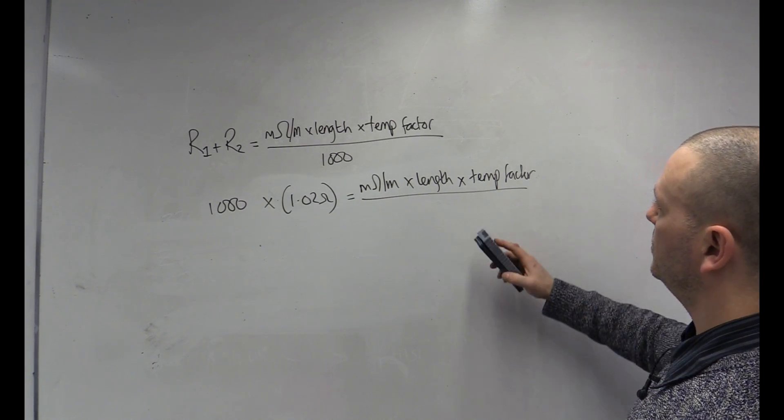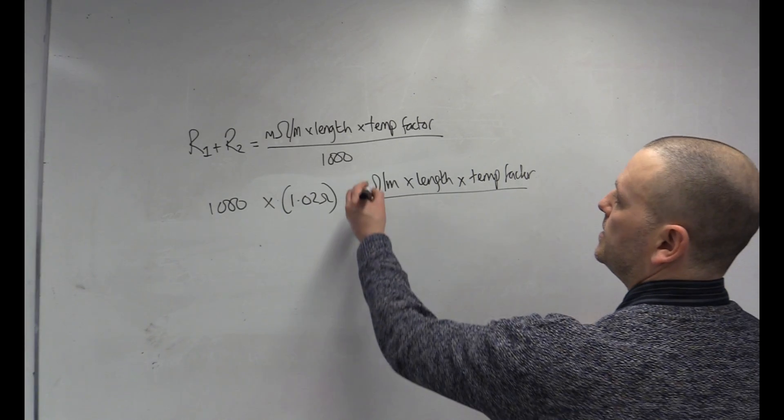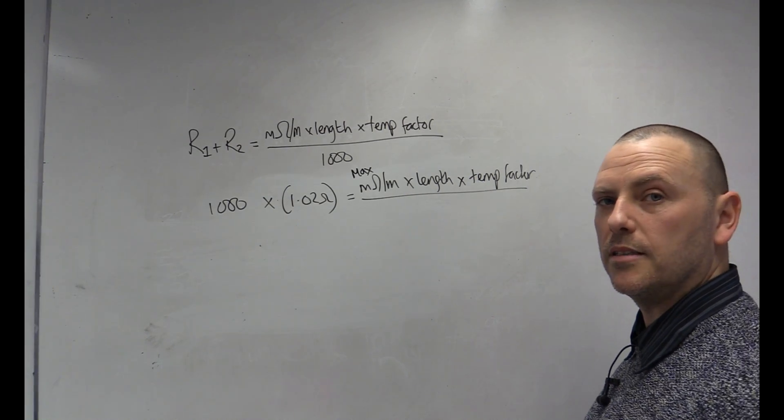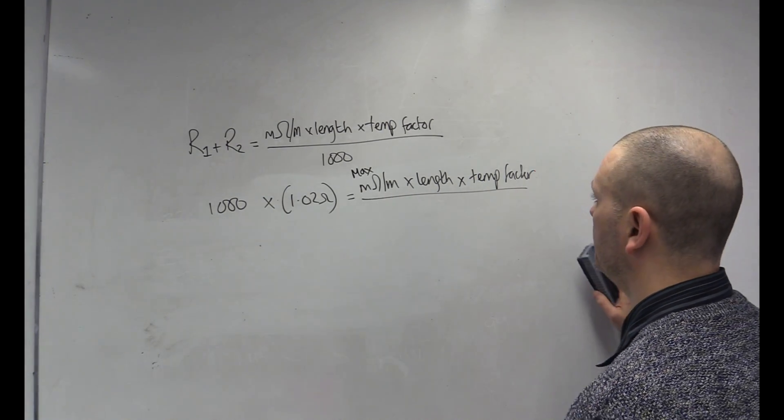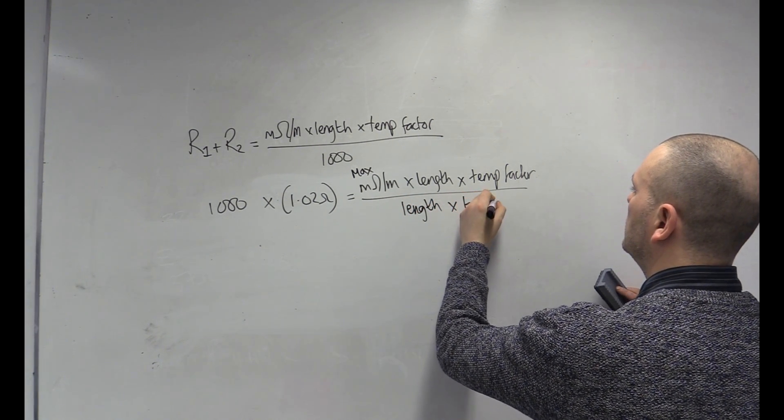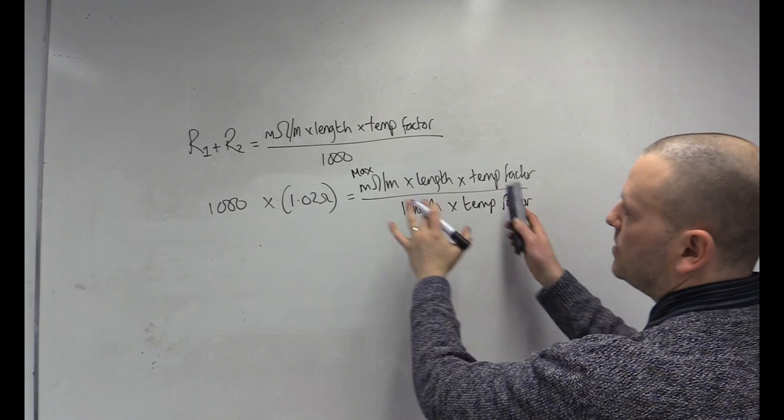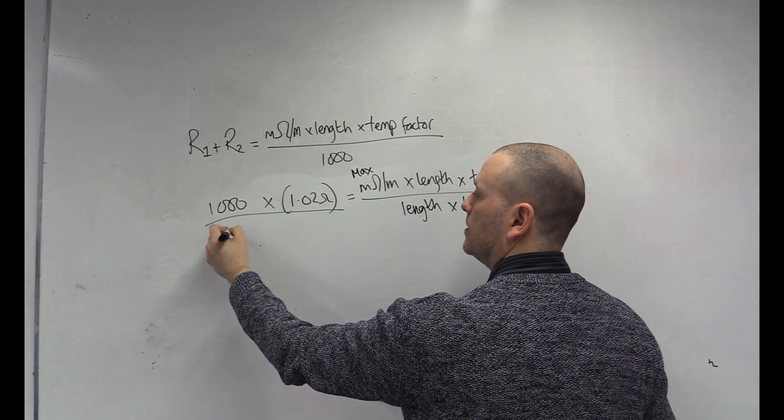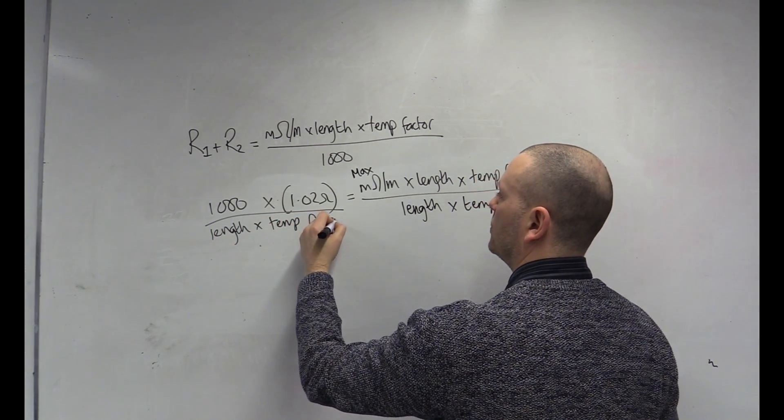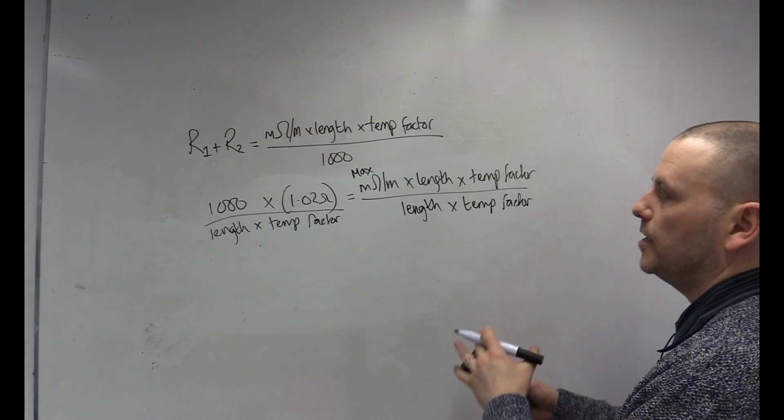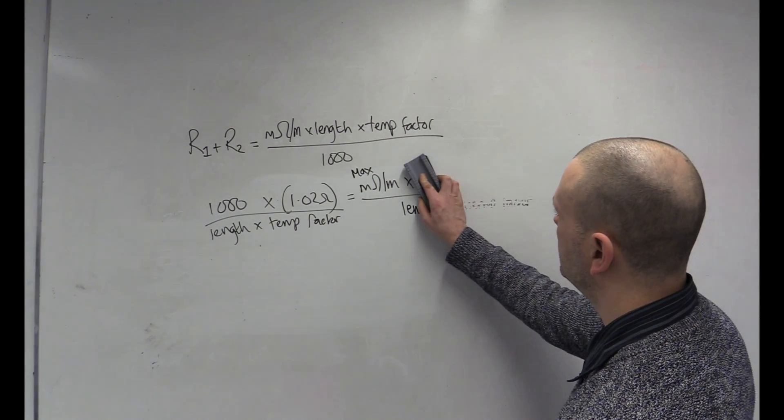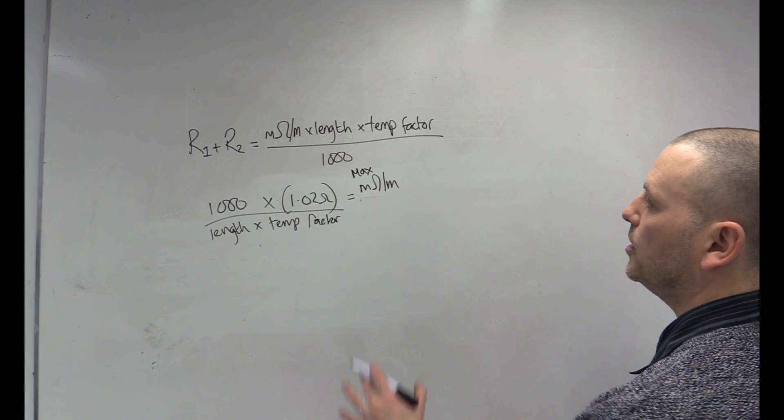Now, we need to isolate milliohms per meter. Incidentally, this is going to give us our maximum milliohm per meter. Now, all of these things are being multiplied at the same time, so we can divide them out at the same time. So, that's exactly what I'm going to do. So, length, temp factor. I've unbalanced it. I've got to copy it. Length times temp factor. Now, we could put some values in from the example before. So, let's just tidy this up. We've got our equation here.